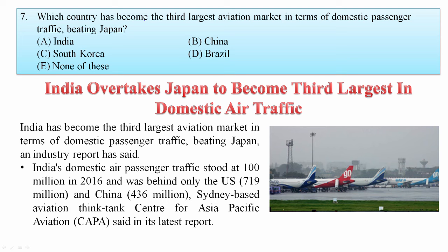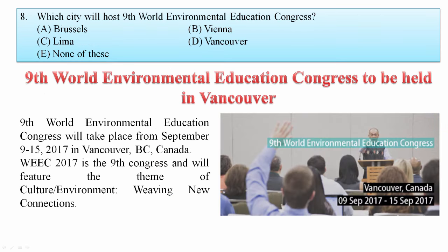Which country has become the third largest aviation market in terms of domestic passenger traffic, beating Japan? India has become the third largest aviation market in terms of domestic passenger traffic, beating Japan, as per an industry report. The first place is the US, second is China, and third is now India. Your answer is A — India.